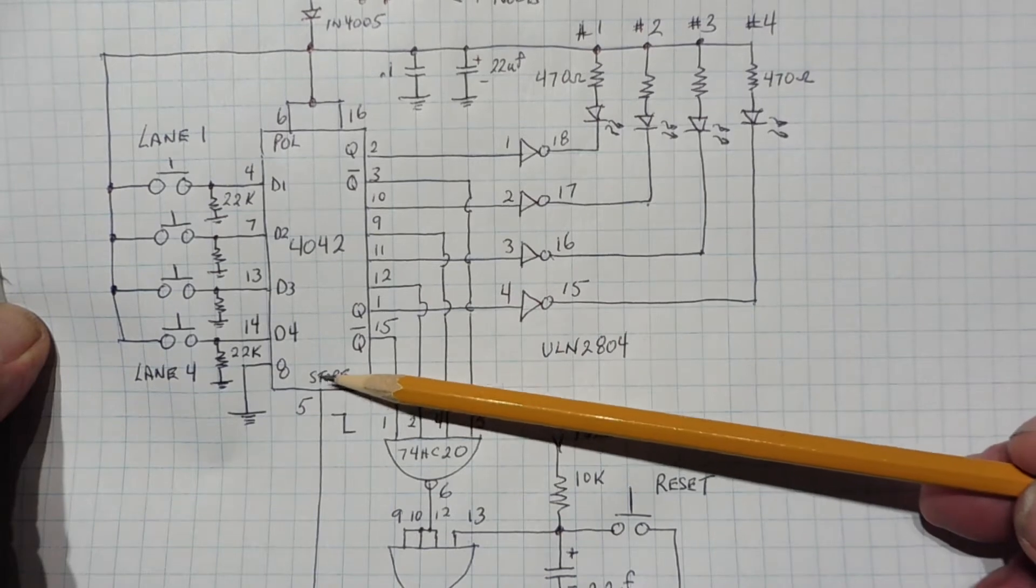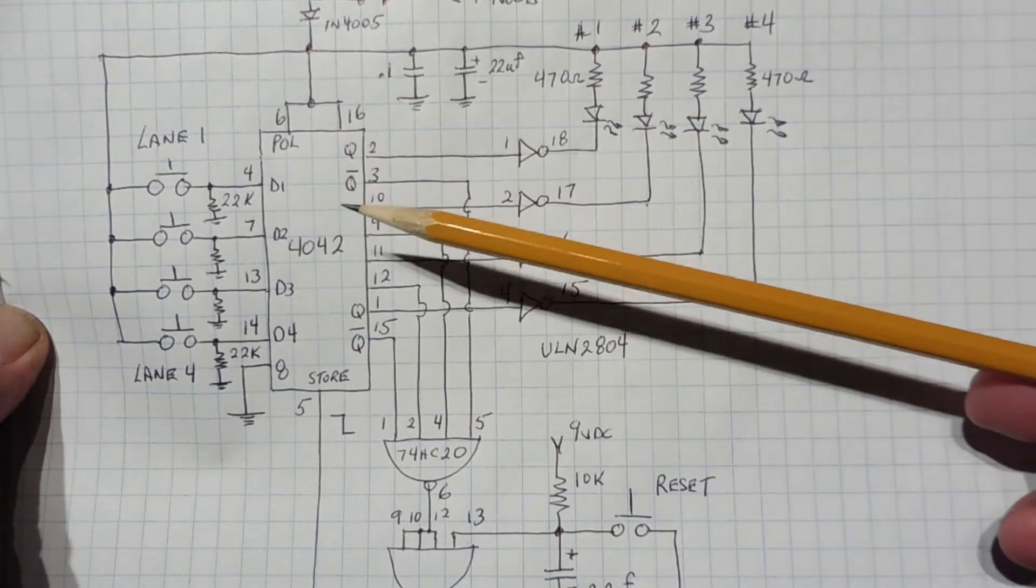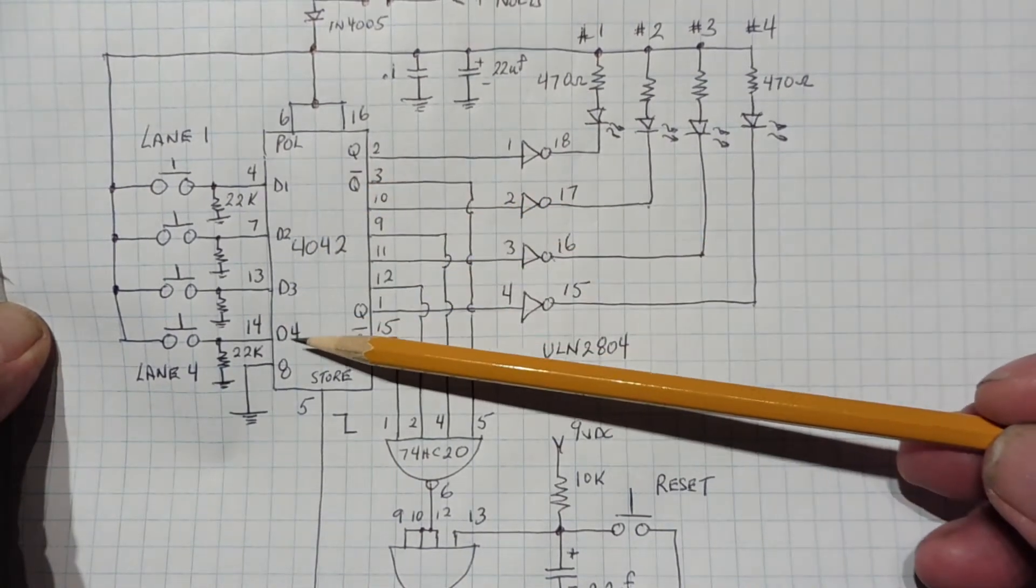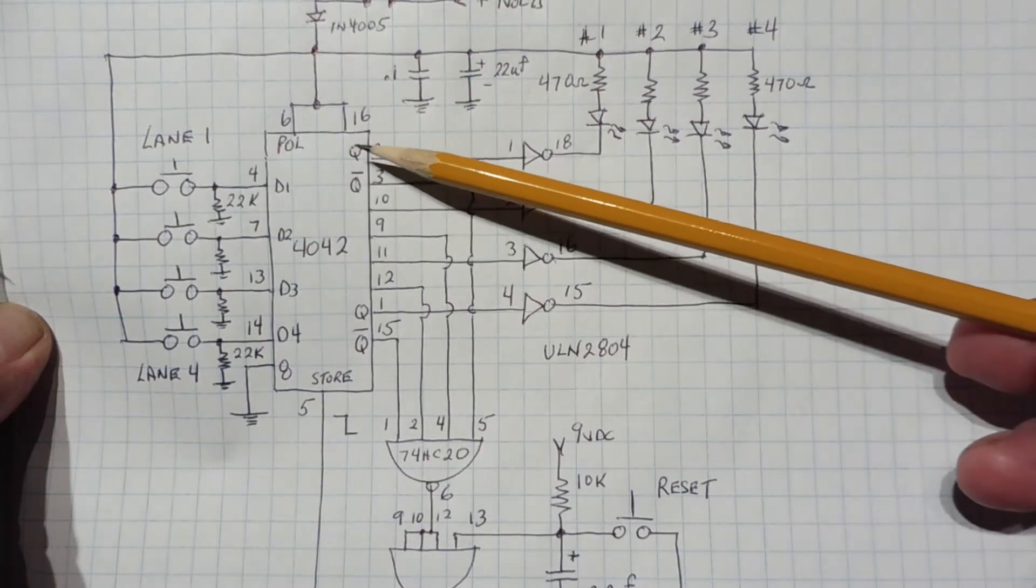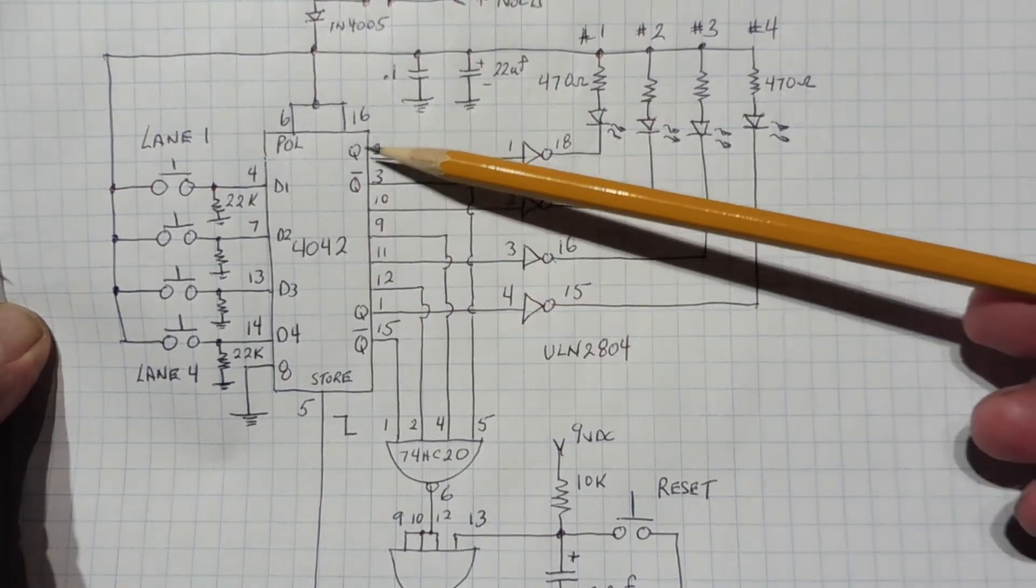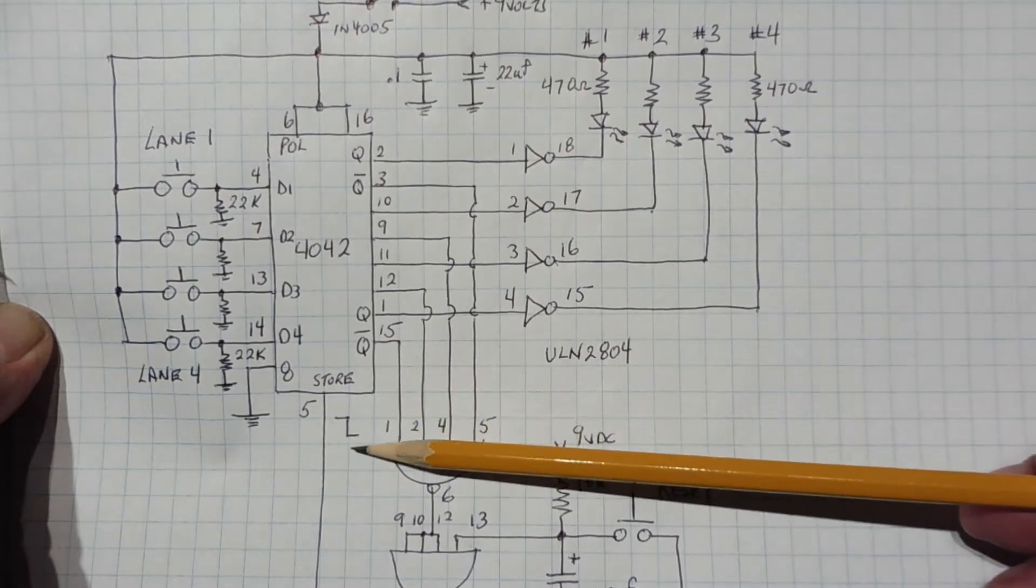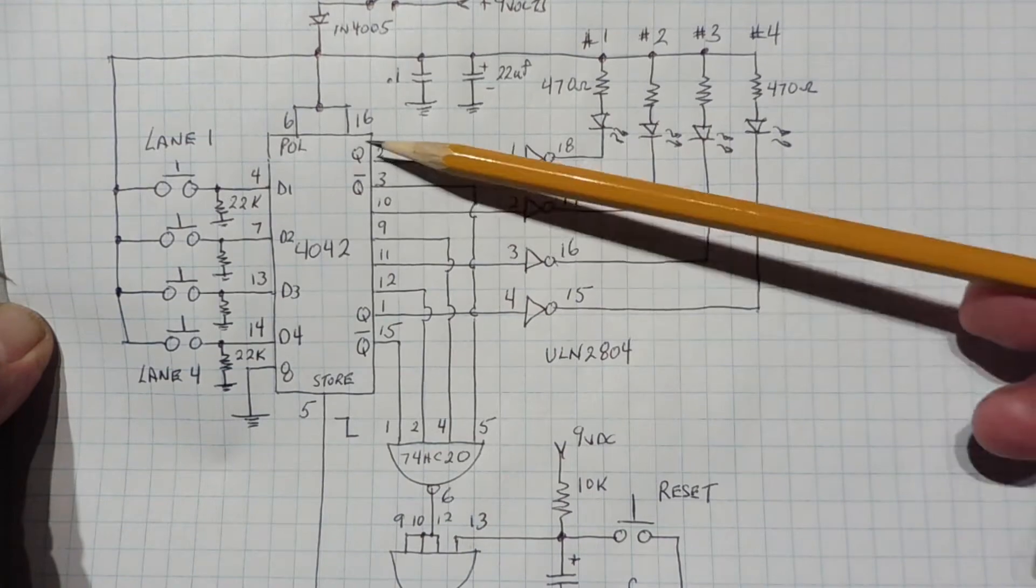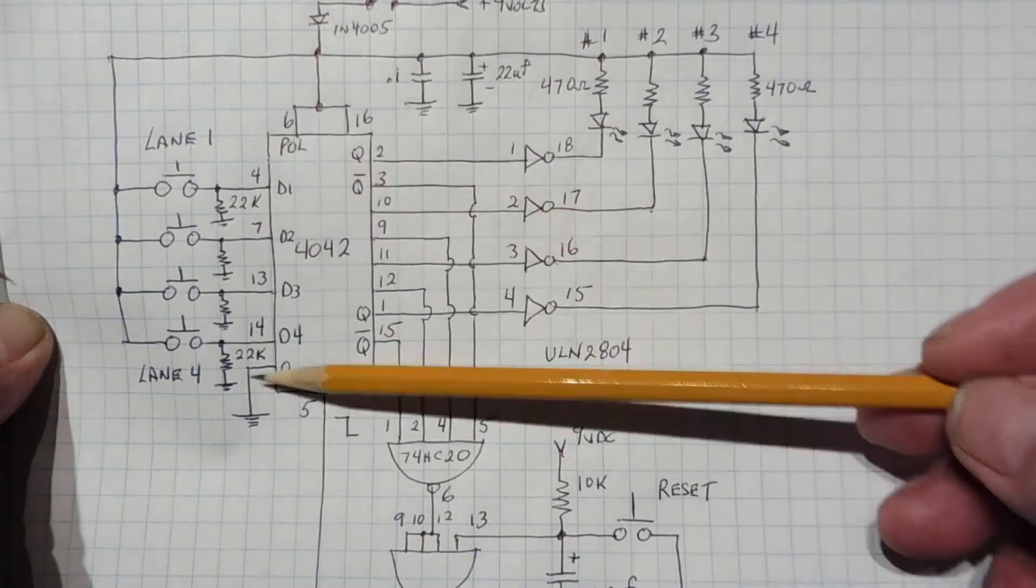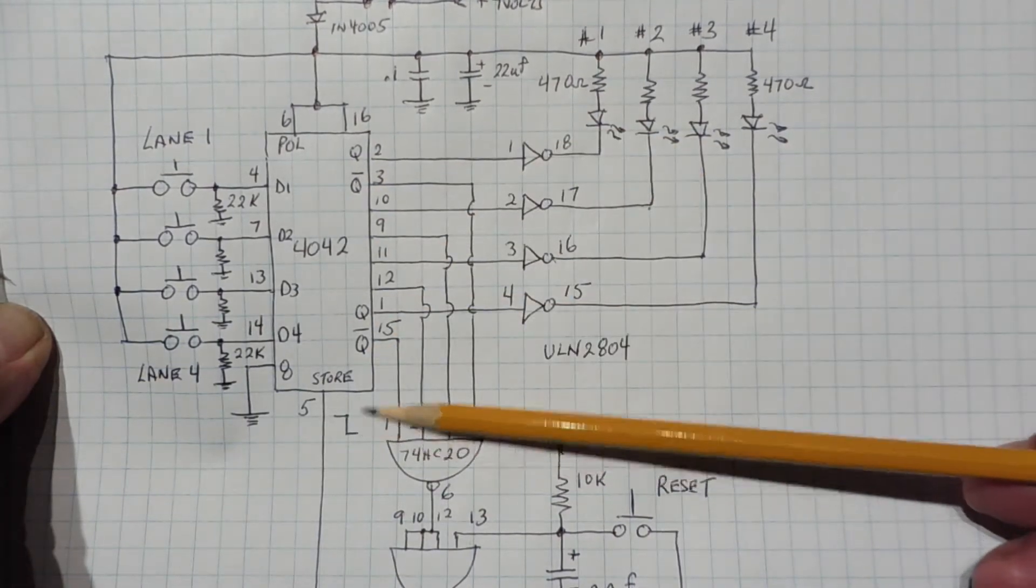Now when pin 5 is high and pin 6 is high on the 4042, the flip-flop is in transparent mode, which means all the D inputs from D1 to D4 are connected to the Q outputs, Q1 to Q4. So whatever happens on the D inputs will happen on the Q outputs, until the store pin goes low, from a high to low. It will latch the outputs, they'll freeze. So no matter what the D1 to D4 is doing on the inputs, the Q and Q-bar outputs will be latched until the store pin goes high again.